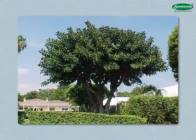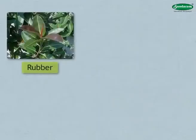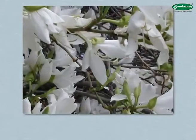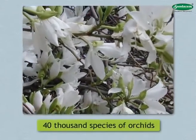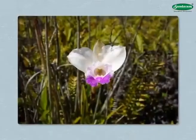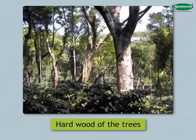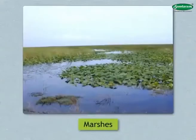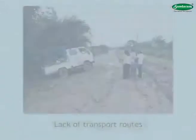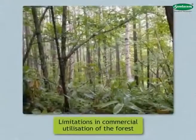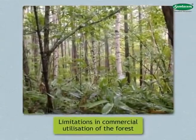The rubber plant is native to this basin. Rubber, mahogany, rosewood, and other trees are found in these forests. There are as many as 40,000 species of orchids, some bearing a single but large flower. Hardwood trees, marshes, unhealthy climate, innumerable insects, and lack of transport routes were factors that limited the commercial utilization of the forest.